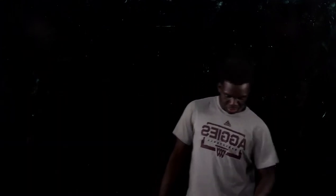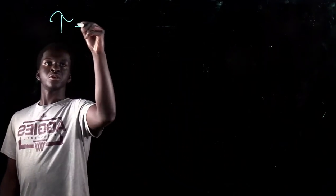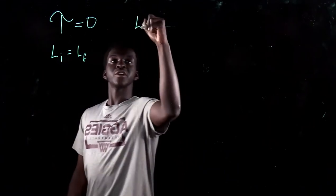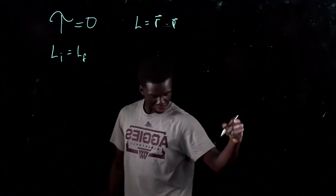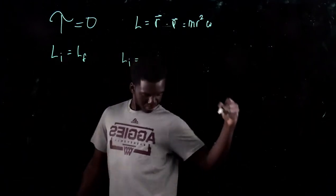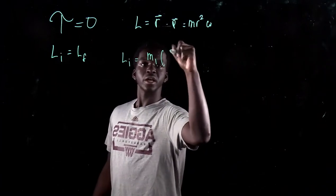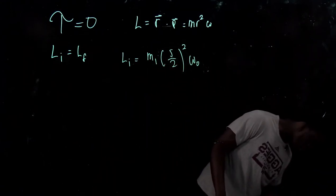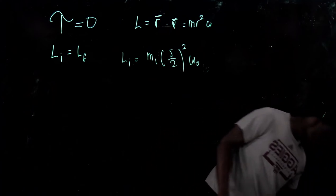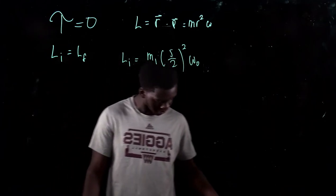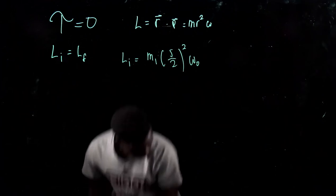Let's start by writing that torque equals zero, so initial angular momentum equals final angular momentum. The equation is L equals r cross p, which equals mr²ω. For the initial angular momentum: Li equals m1 (s/2)² ω₀, since the radius given is s/2 and ω₀ is the initial angular velocity. This is the only initial angular momentum acting.